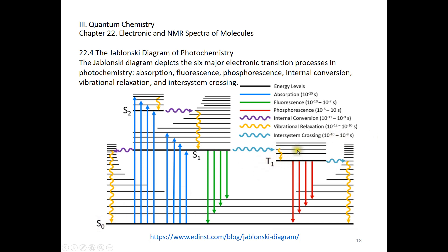From T1 to S0, this is also called inter-system crossing, in which the energy is conserved but the electron spin is flipped. You need to flip the spin of one electron to go from T1 to S0, and then undergo vibrational relaxation all the way to the lowest level. Also from T1 to S0, the molecule can go through the phosphorescence process — in phosphorescence, the molecule goes from T1 to S0 directly and emits a photon. This T1 to S0 transition is spin-forbidden, so phosphorescence is usually much slower than fluorescence. Fluorescence is spin-allowed; phosphorescence is spin-forbidden.